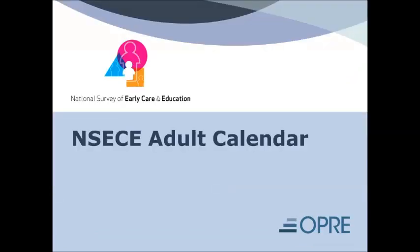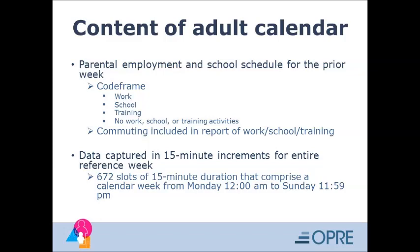I will now cover the content and mechanics of the calendar file. The adult calendar regards parental employment and school schedules for the prior week. There are three key elements to the code frame: work, school or training, and the inferred category of no work, school, or training. You would know that the parent was either at work, school, or training, and then something else — but you wouldn't know specifically what that something else was. Commuting was included in the report of work, school, or training. The data was captured in 15-minute increments for the entire reference week, from Monday midnight to Sunday 11:59 p.m. of the week immediately prior to the interview.